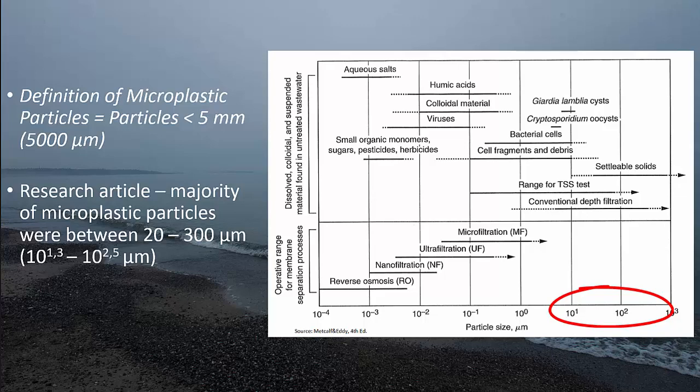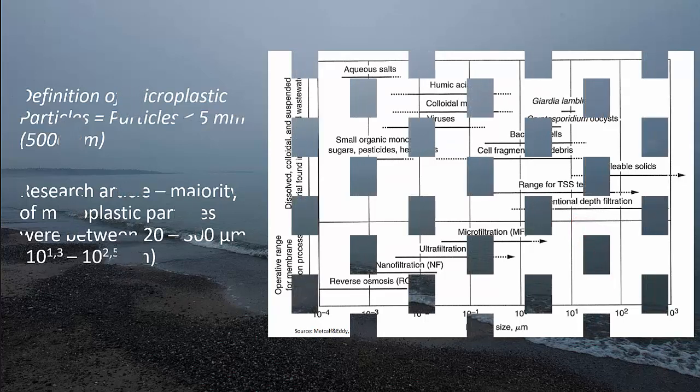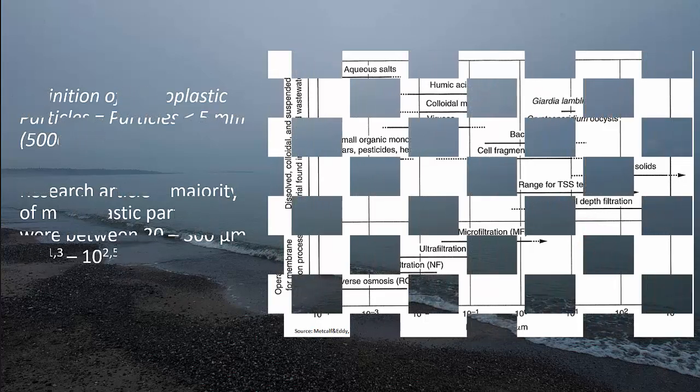You can see the span here in the graph, and you can also see the wording 'conventional depth filtration.' That suggests that the particle sizes found in the research could be taken away by normal filtration. Is this true? Well, let's have a check.